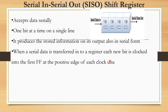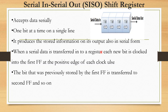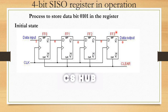When serial data is transferred into a register, each new bit is clocked onto the first flip-flop at the positive edge of each clock pulse. Then the bit that was previously stored by the first flip-flop is transferred to the second flip-flop, and so on. This is a 4-bit SISO register in operation — the process to store data bits 0101 in the register. We use 4 D flip-flops in this example.